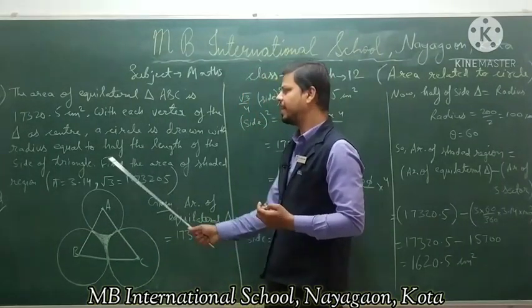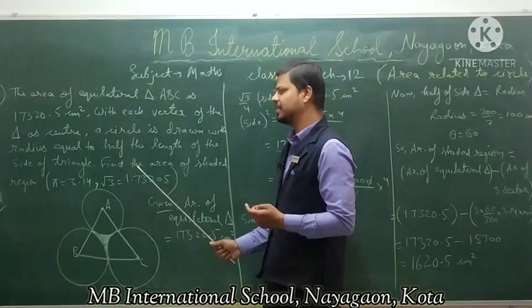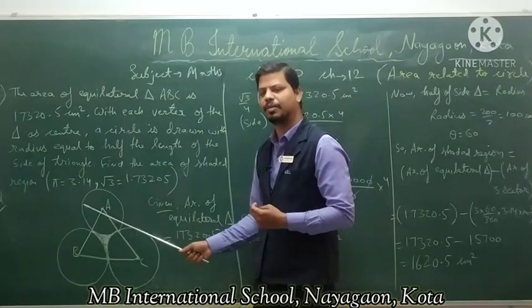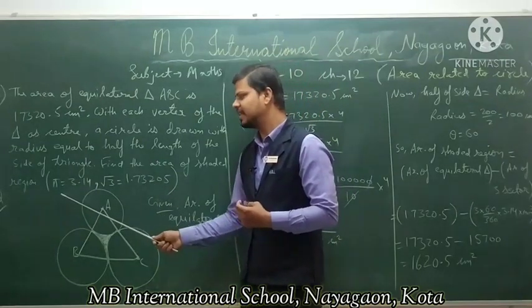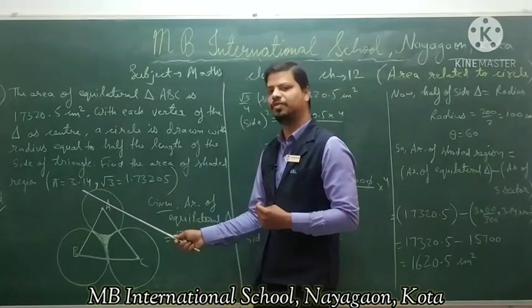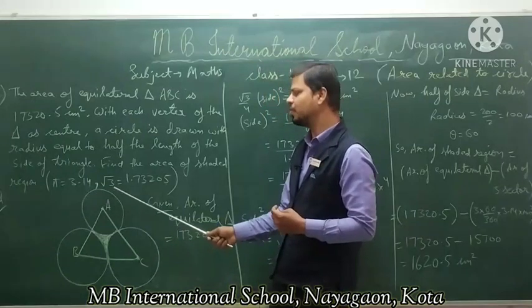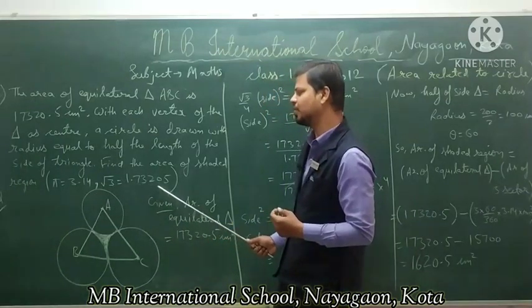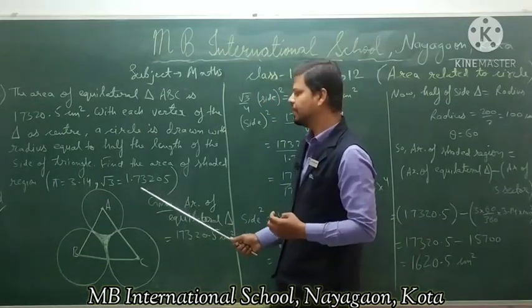You have to find the area of the shaded region. The area of the shaded region involves the value root 3 = 1.73205 and pi = 3.14, as given in this question.